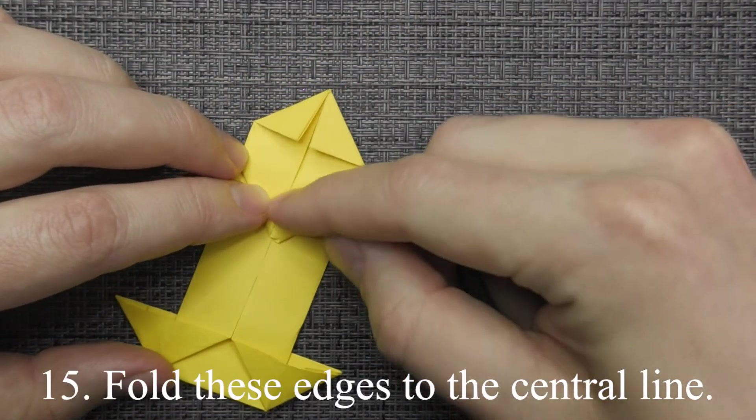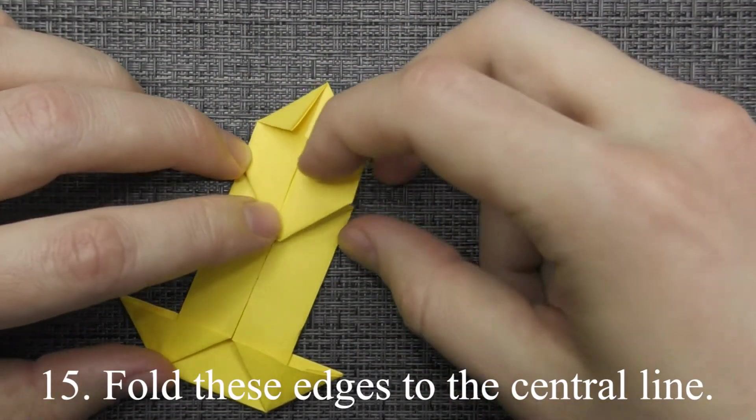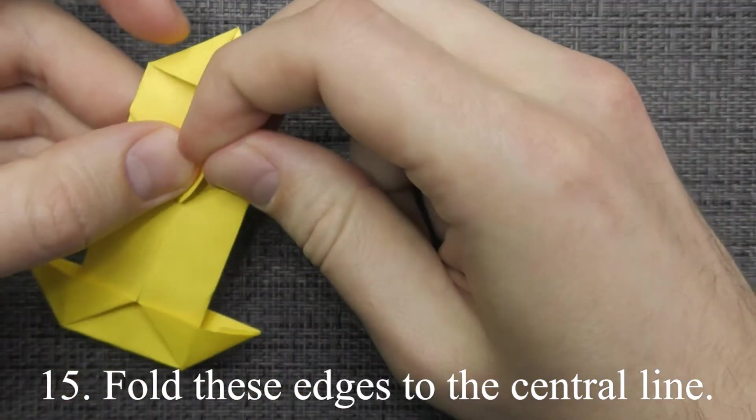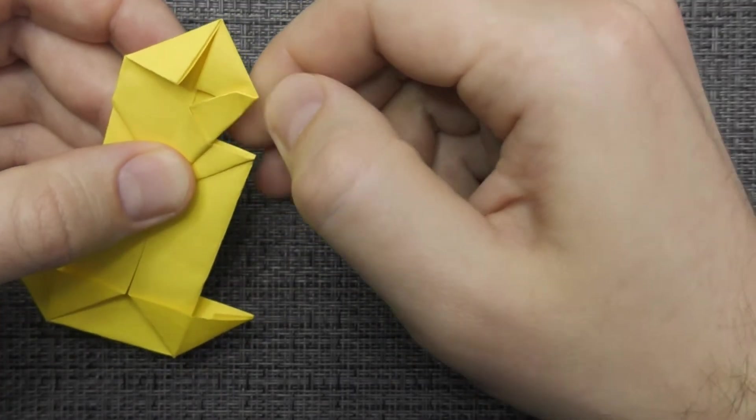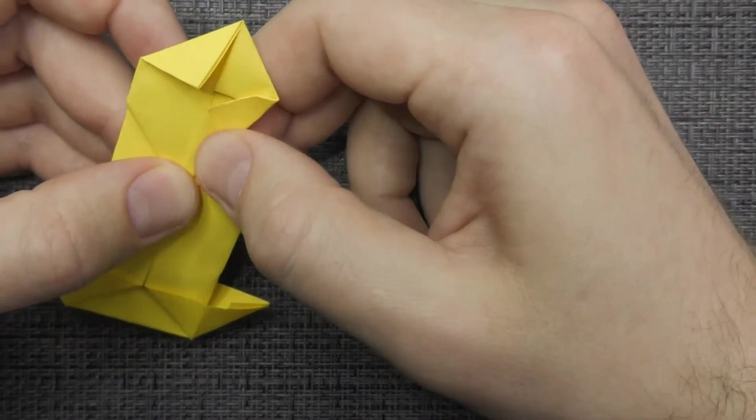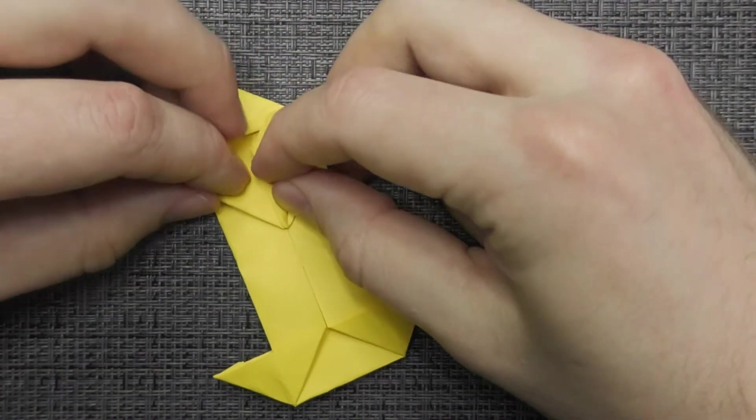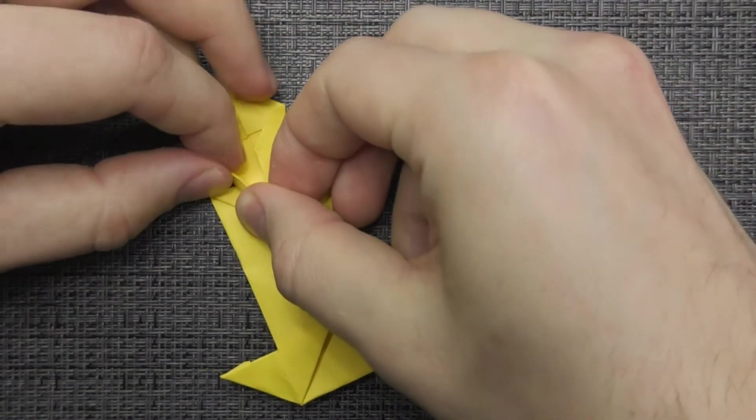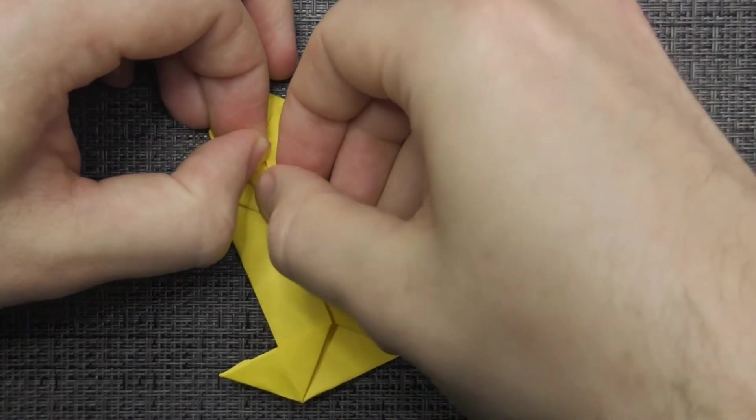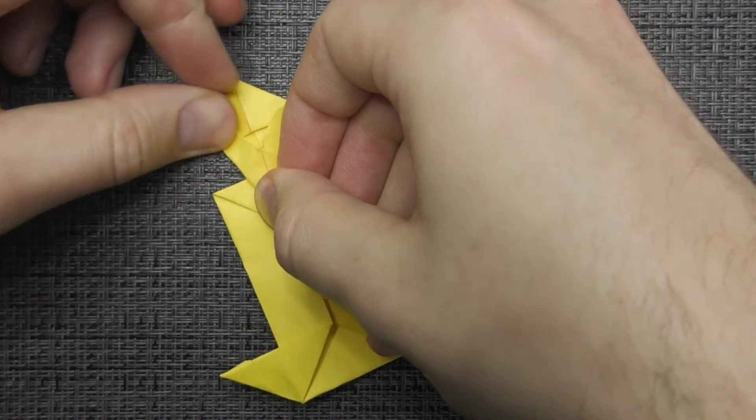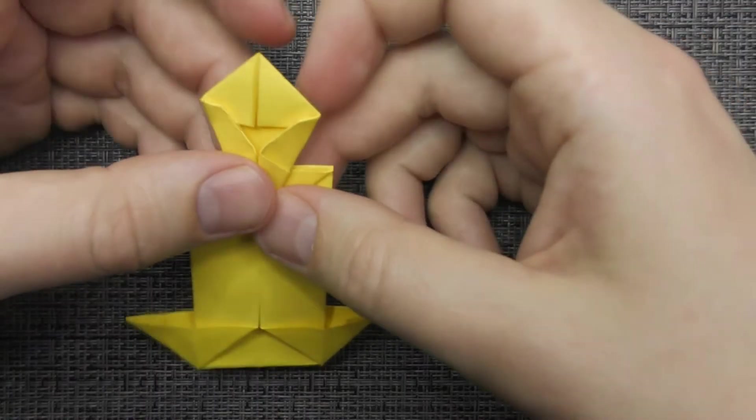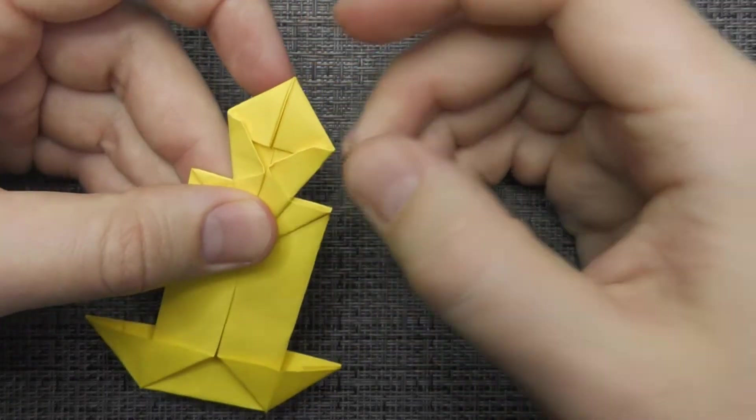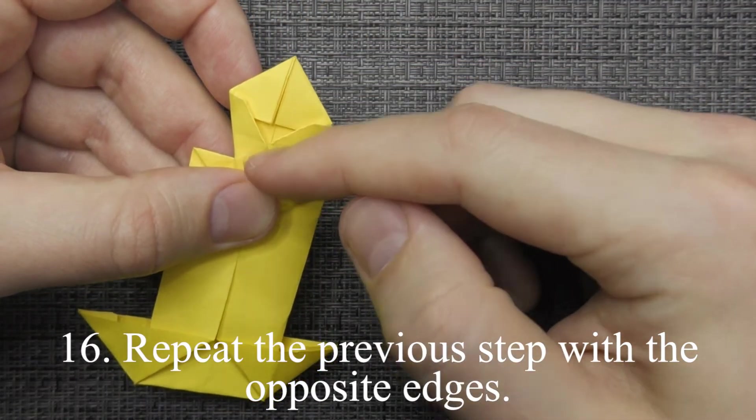Fold these edges to the center line. Repeat the previous step with the opposite edges.